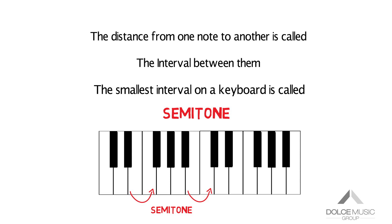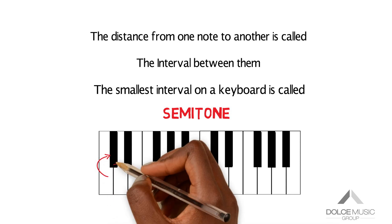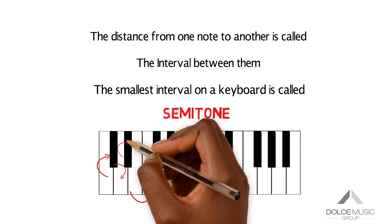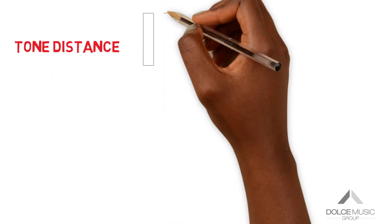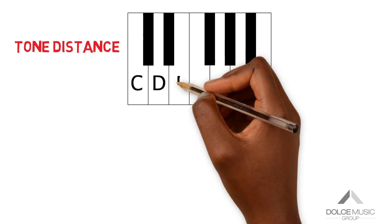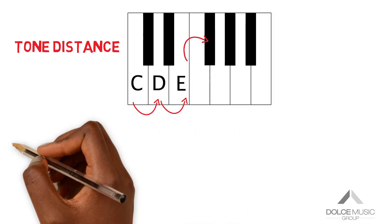For example, C to C sharp, C sharp to D natural, D natural to D sharp or D to E flat. Two semitones together make a tone. For example, C to D, D to E, E to F sharp.